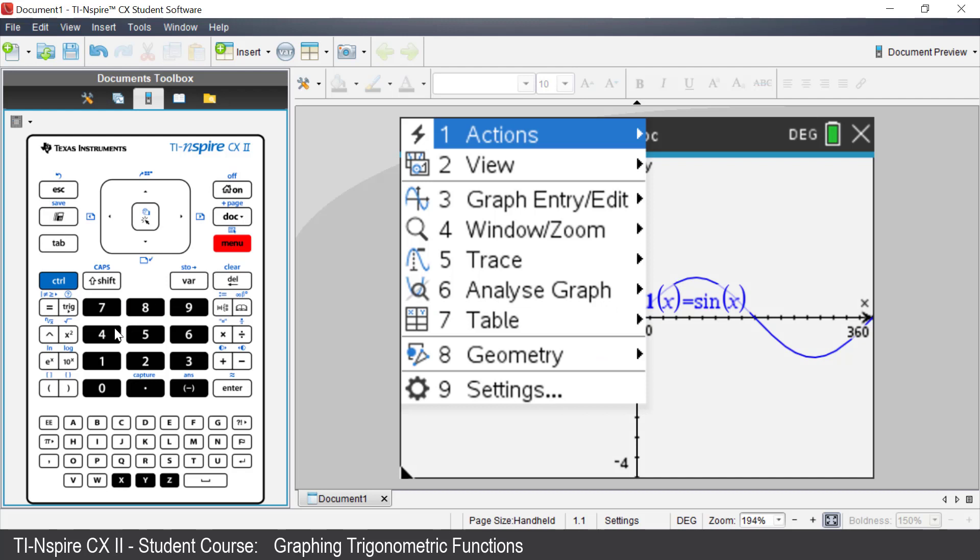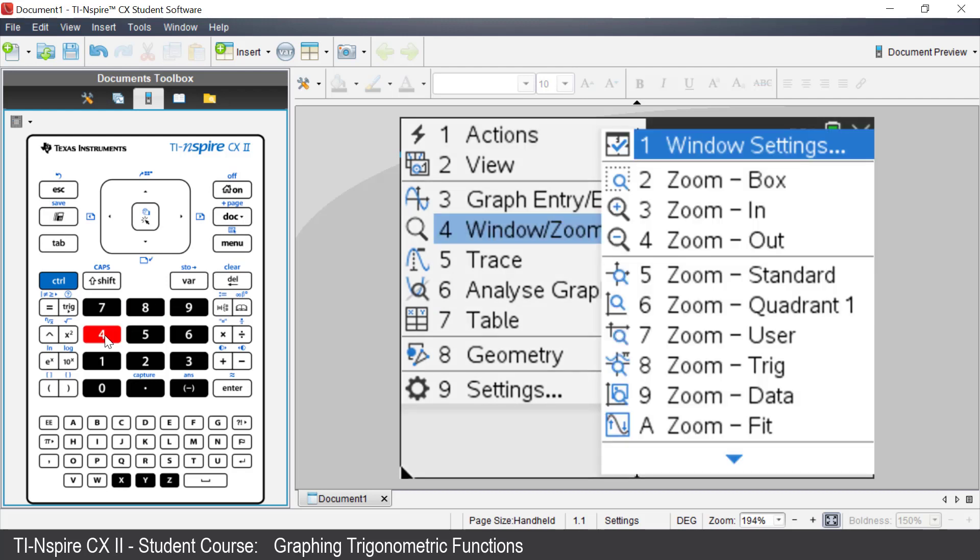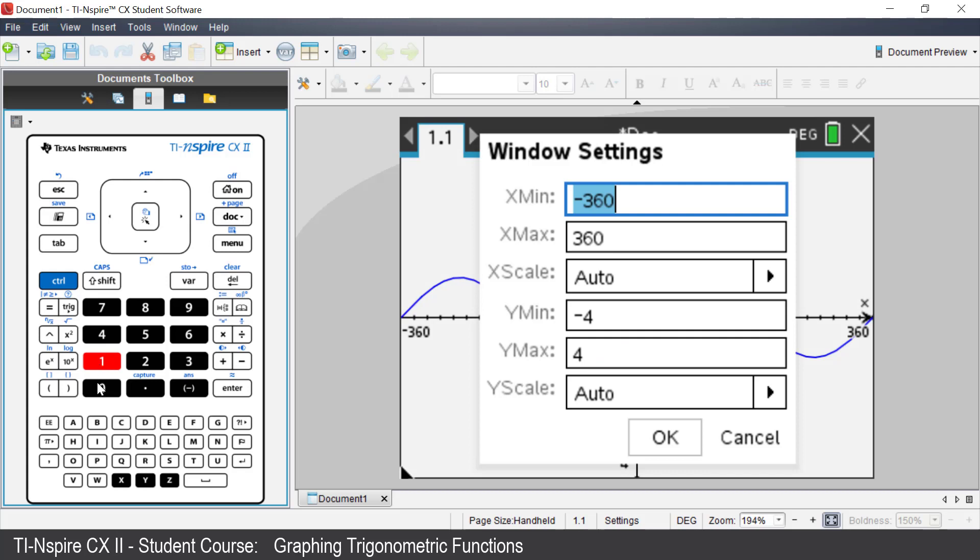Select Window Zoom. Select Window Settings.